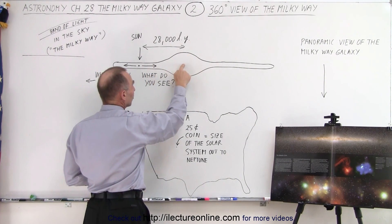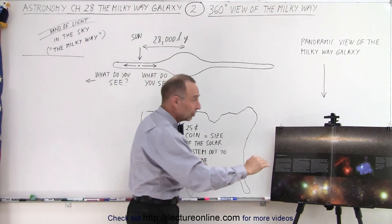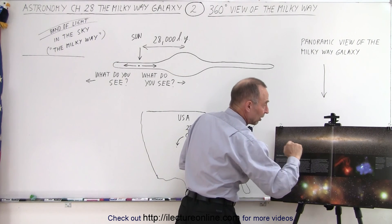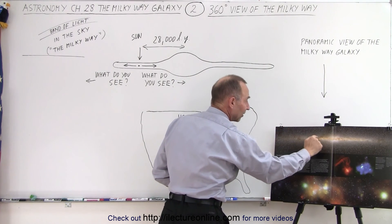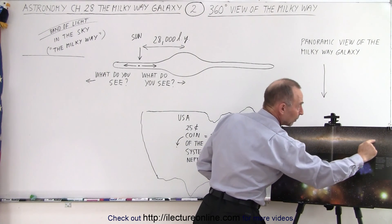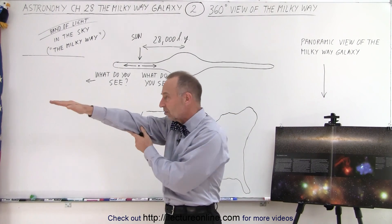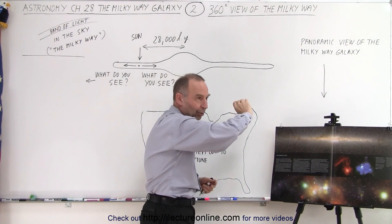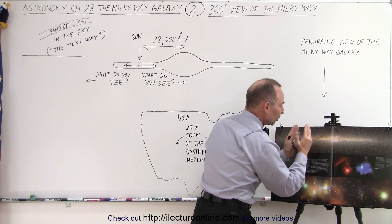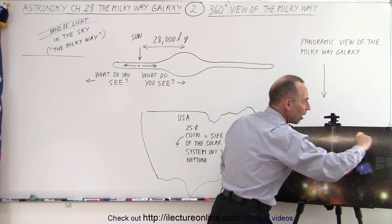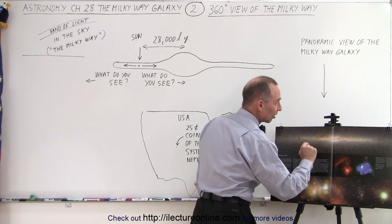When we turn completely around, we're looking toward the center of the galaxy — but the center is not visible because it's completely blocked by all the nebulas in our way. Going from left to right, we're simply turning around: here we're looking away from the center, then toward the center, then back to the same direction as before. We're essentially turning 360 degrees around as we observe the galactic disk, and that's what this picture represents.